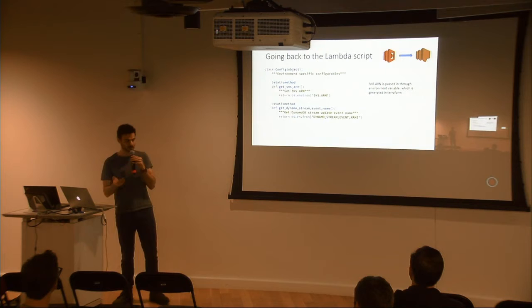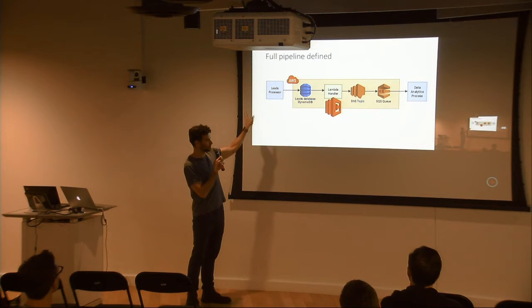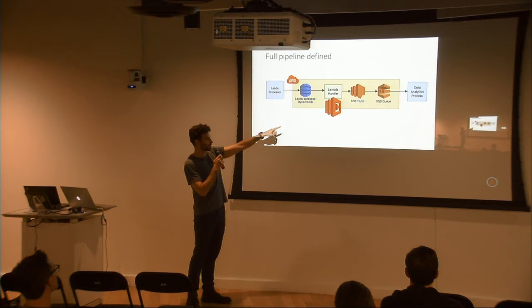Going back to the Lambda script: this is the initial entry point for the handler. We're passing in the ARN for the SNS queue generated by Terraform. You can see we're defining environment variables — we told Terraform to create an SNS topic and give us an ARN for that, and then we pass that ARN as an environment variable into our Lambda function. Our Lambda function gets that ARN by reading the environment and can then access whatever Terraform creates. We don't need to know about it ahead of time and hard-code it, or put it in a key-value configuration database. It just reads the OS environment call from Python to get the SNS ARN, and also gets the DynamoDB stream event in case we wanted to differentiate updates versus inserts. So that Terraform established our full pipeline: the DynamoDB, the Lambda handler, the SNS topic which feeds the SQS queue, which goes into our analytics process.